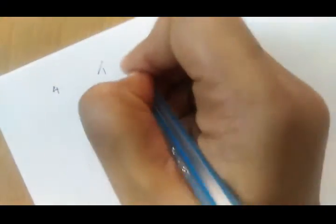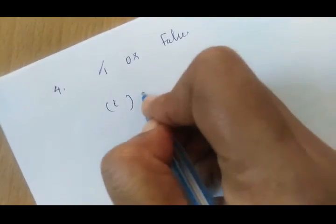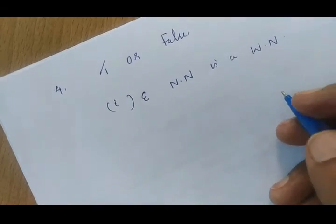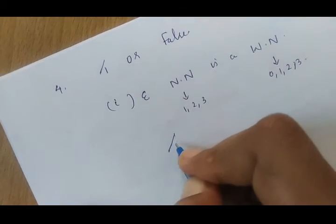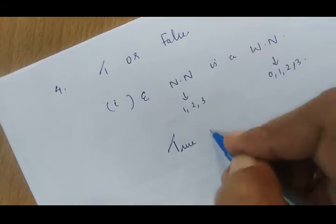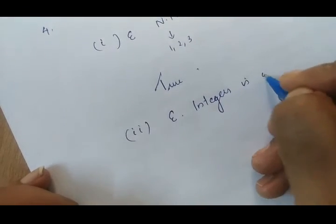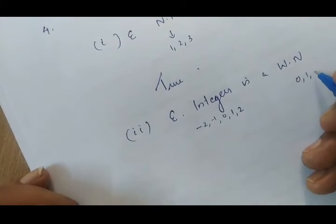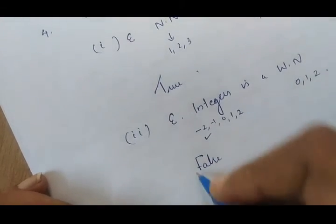The last question in the exercise is to state whether the following statements are true or false with reasons. First statement: every natural number is a whole number. Natural numbers consist of 1, 2, 3 etc. Whole numbers consist of 0, 1, 2, 3 etc. So this statement is true. Second statement: every integer is a whole number. Integers include negative values like minus 2, minus 1, 0 and positive values, while whole numbers consist of only 0, 1, 2 etc. So this statement is false, because whole numbers do not contain negative values.